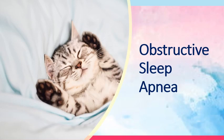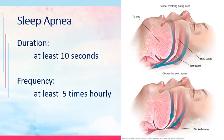The first topic that we will discuss is obstructive sleep apnea. For a condition to be categorized as sleep apnea, there needs to be a duration of apneic episodes of at least 10 seconds, the frequency of which should be at least 5 times hourly. Notice the illustration on the right side of the screen which differentiates normal breathing during sleep and obstructive sleep apnea. In obstructive sleep apnea, there is an obstruction of the airway brought about by the backward movement of the tongue.